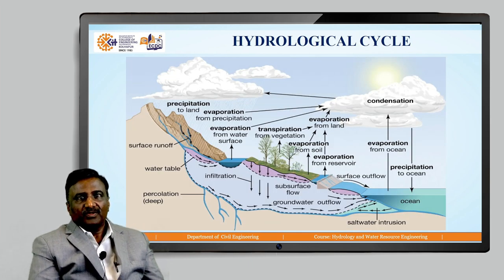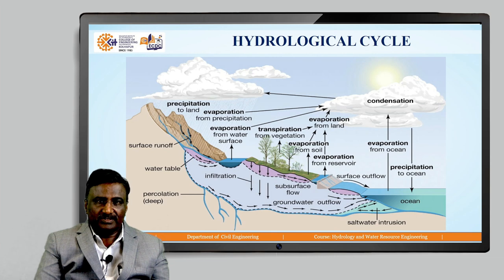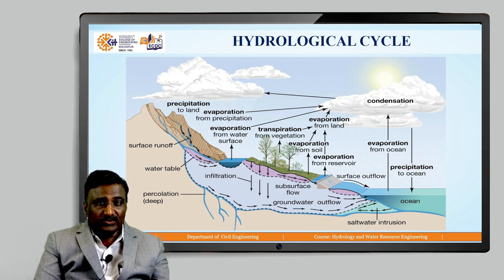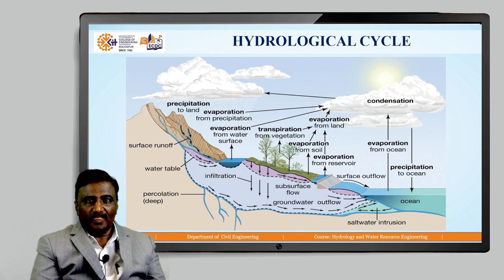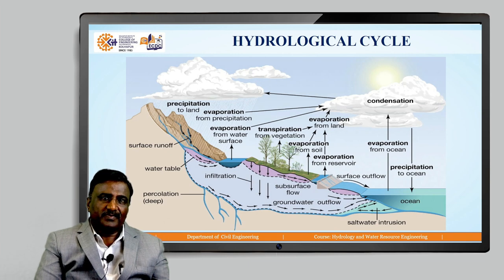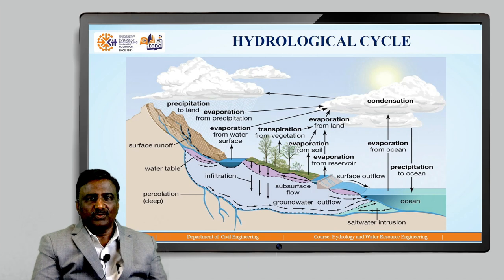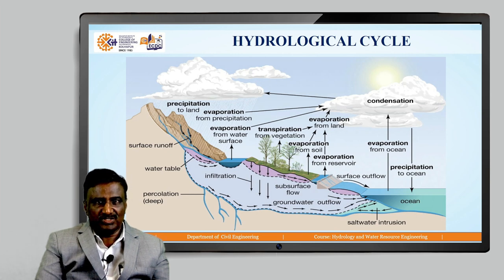Next, we will move to the hydrological cycle — how water circulates. The earth contains surface waters in the form of lakes, reservoirs, oceans, ponds, etc. Due to solar radiation, all water bodies on earth get evaporated, transforming from liquid state to vapor state and moving in an upward direction. This process is called evaporation.